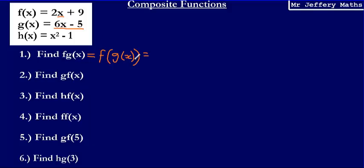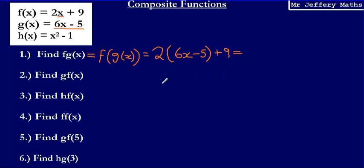So we're taking 6x minus 5 and saying this is 2 times (6x minus 5) plus 9. We've substituted 6x minus 5 for the x. All that's left is to tidy it up by expanding and simplifying. Expanding the brackets gives us 12x minus 10, and then plus 9 on the end. Tidying up minus 10 plus 9 leaves us with 12x minus 1.